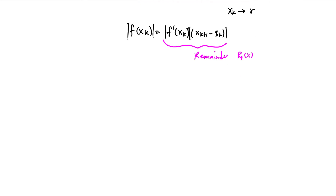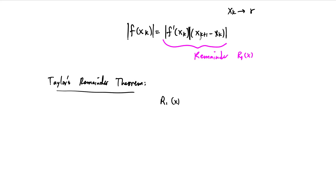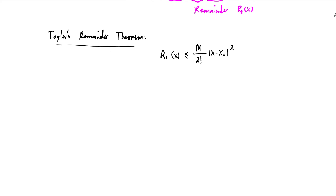Let's write down Taylor's remainder theorem. Taylor's remainder inequality says that R₁ of x is always bounded by the second derivative on whatever interval we're looking at. Specifically, R₁ is bounded by M over 2 factorial times x minus x naught squared. This is the bound of the remainder of the first order Taylor approximation.